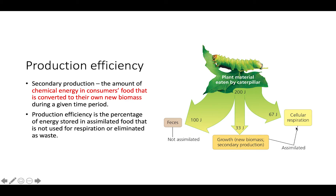The other 100 joules was assimilated. 67 of those 100 joules were lost to cellular respiration, so that is not going to be included in our secondary production. However, 33 joules were then converted into energy used for growth and to produce new biomass, so those 33 joules would be considered part of secondary production.